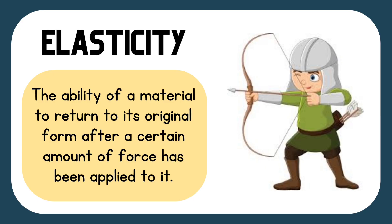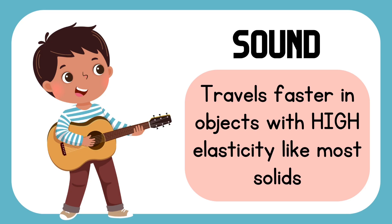Let's talk about elasticity. It is the ability of a material to return to its original form after a certain amount of force has been applied to it — just like a bow and arrow, a rubber band, and many more. An object is said to be elastic when it can be stretched but will go back to its original form. Sound travels faster in objects with high elasticity, like most solids.